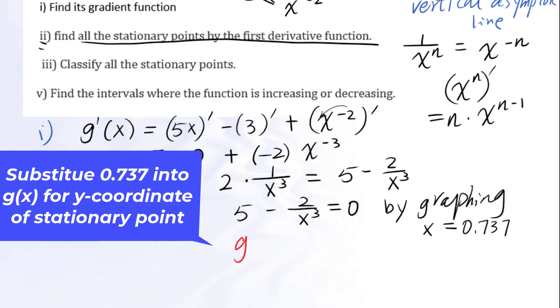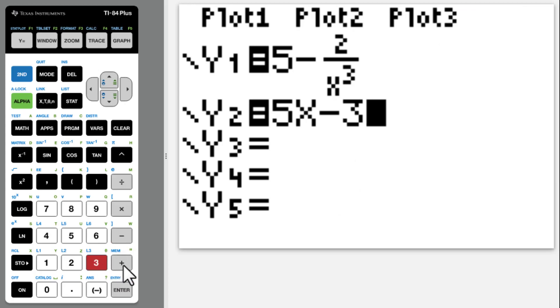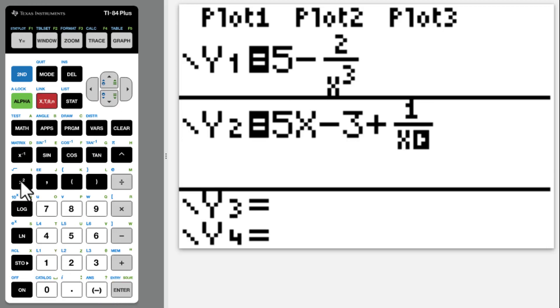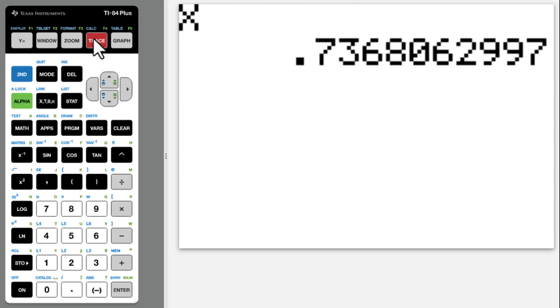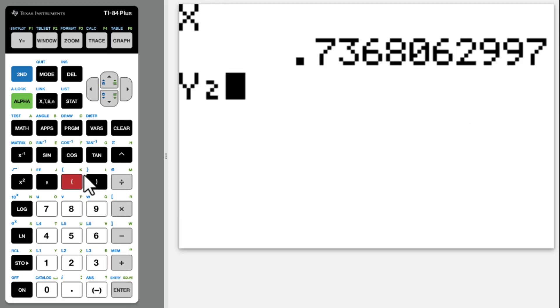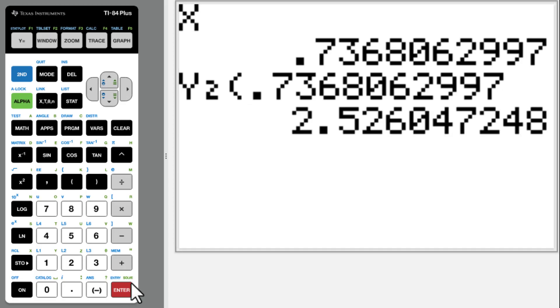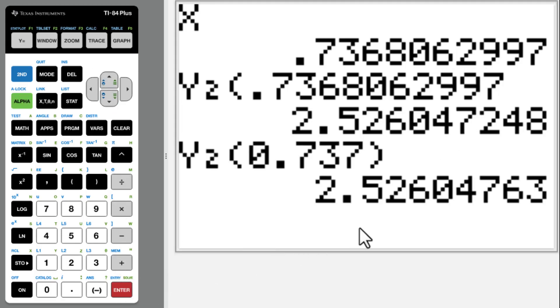We need to figure out g of 0.737 equals. We need to put the original function into y2. 5x minus 3 plus, and y equals, enter, 1 divided by x squared. Quit. Then alpha trace. Go to y2. Remember y2 is the original function. You can put this down. Enter. Get 2.53. Or you can just plug in the three significant fix. You will get the same answer.